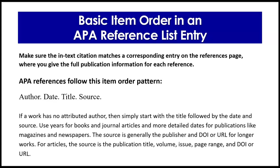If a work has no attributed author, simply start with the title followed by the date and source. Use years for books and journal articles, and more detailed dates for publications like magazines and newspapers, even online. The source is generally the publisher and DOI or URL for longer works. For articles, the source is the publication title, volume, issue, page range, and DOI or URL — but more on that soon.